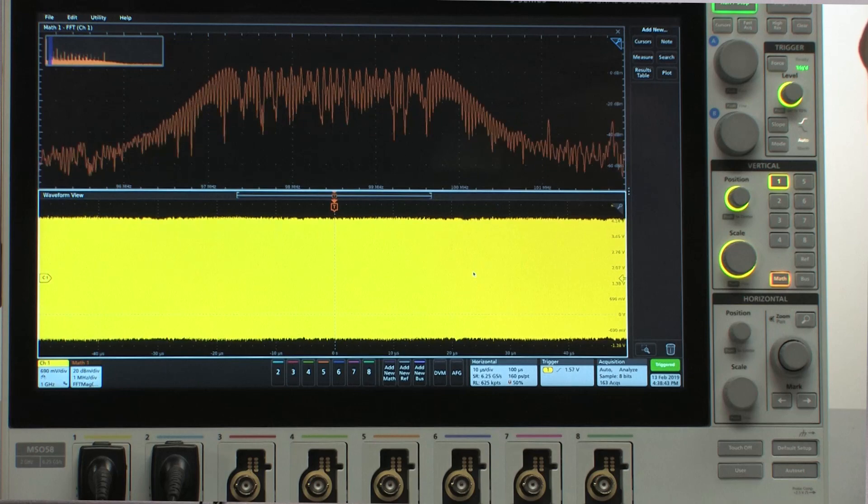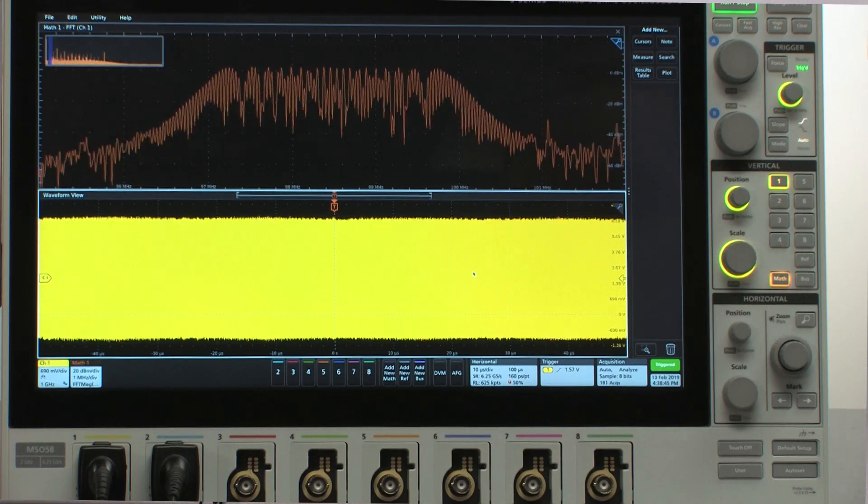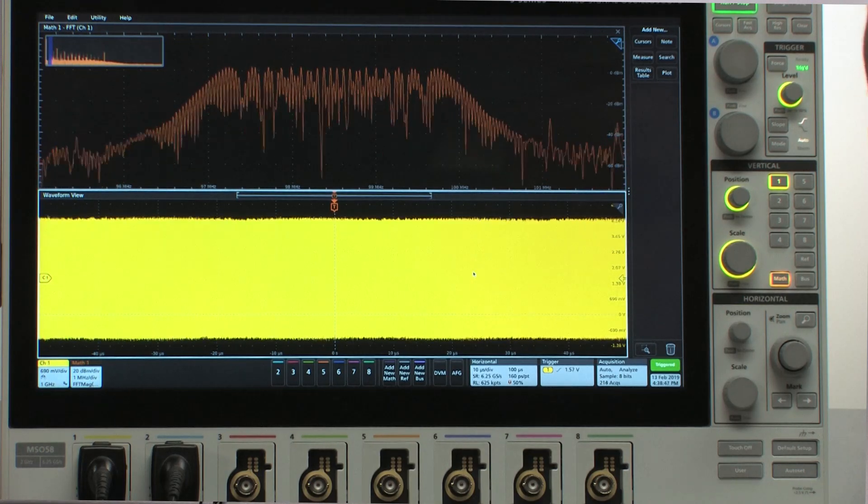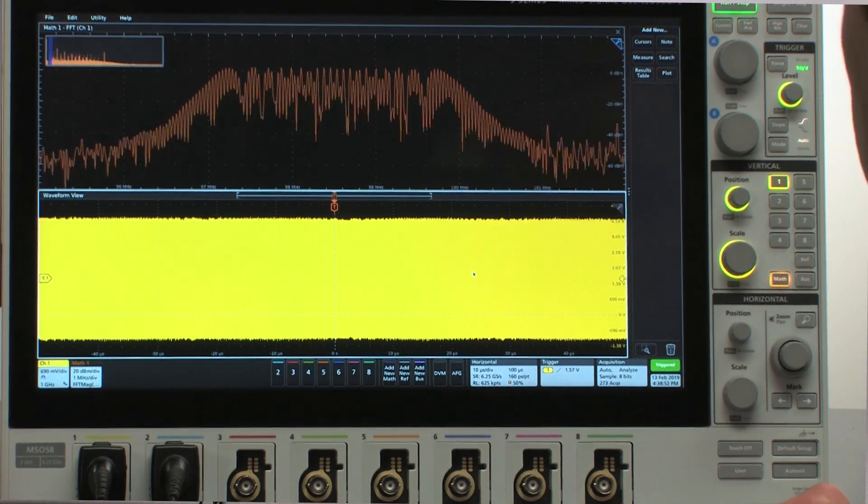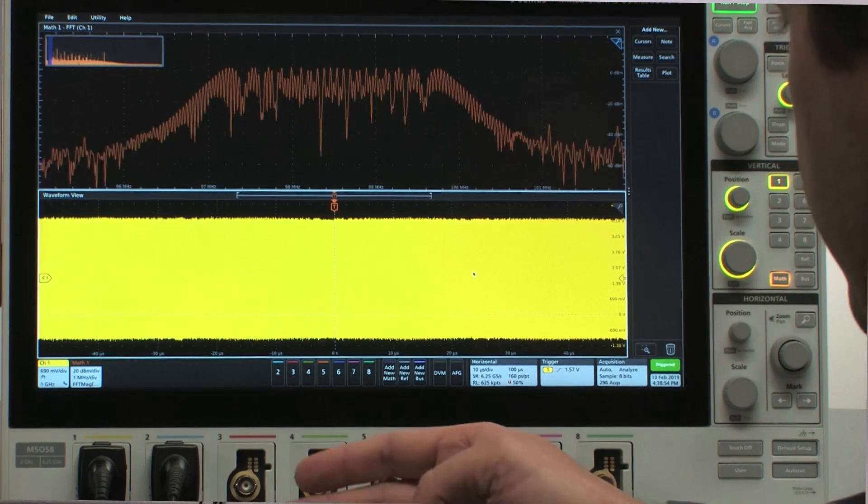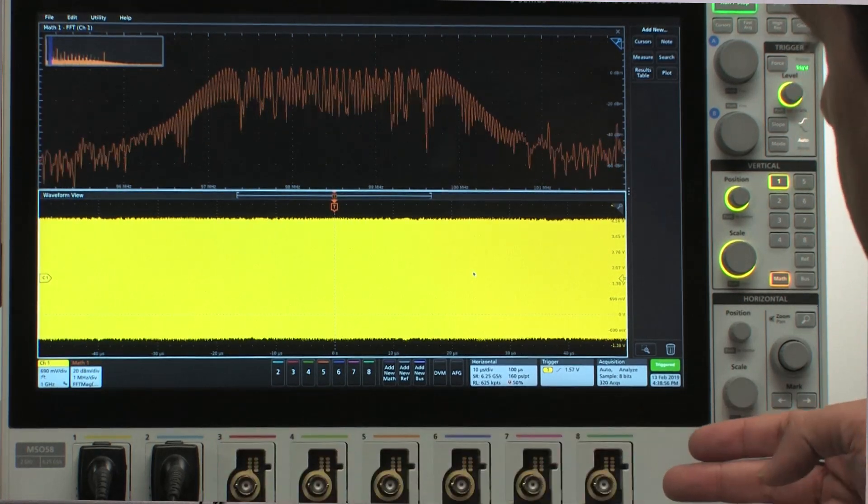But to achieve this setup with a regular FFT, I had to understand the implications of sample rate, record length, and time per div settings on the FFT. Let's look at this using Spectrum View now.